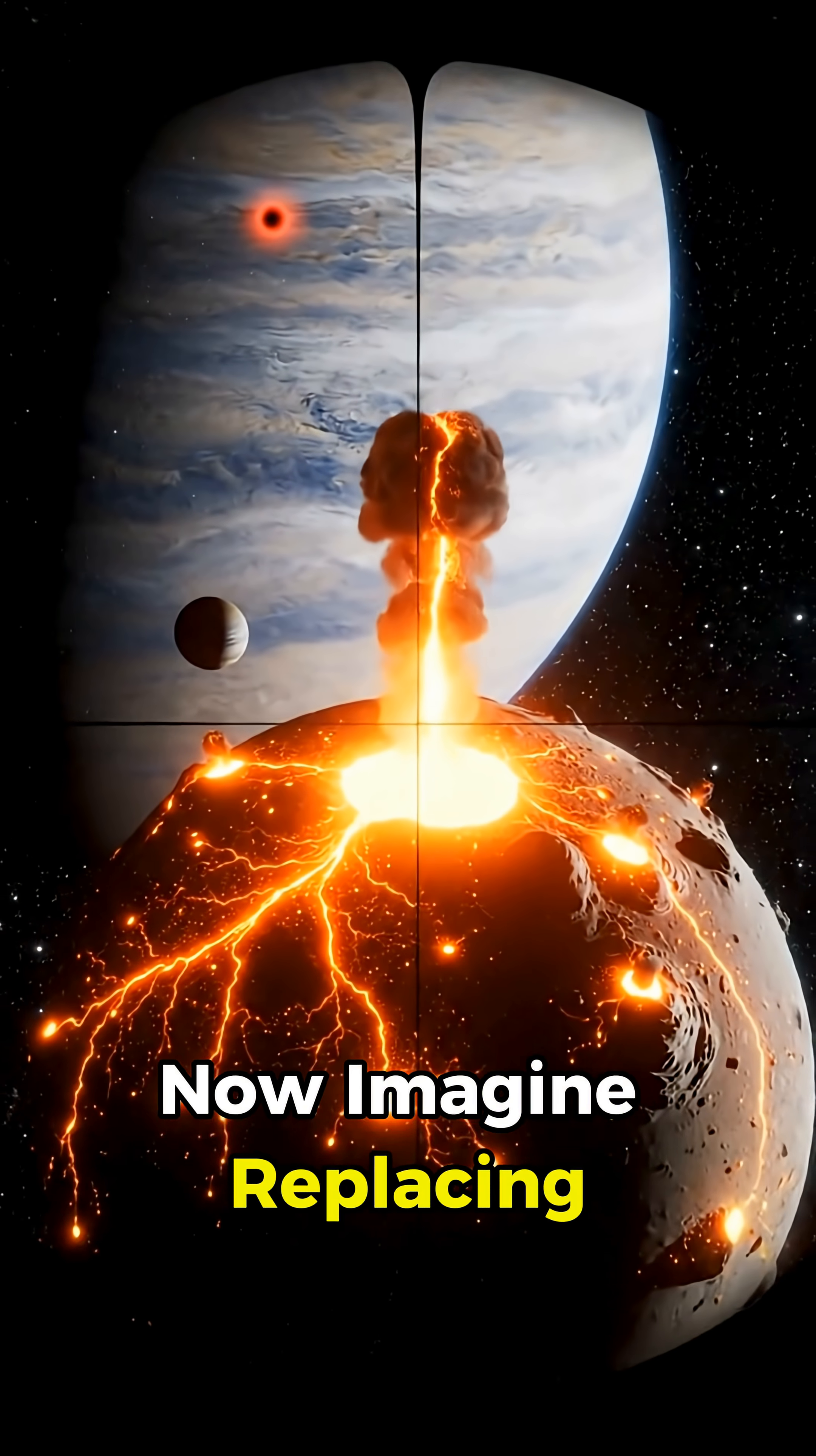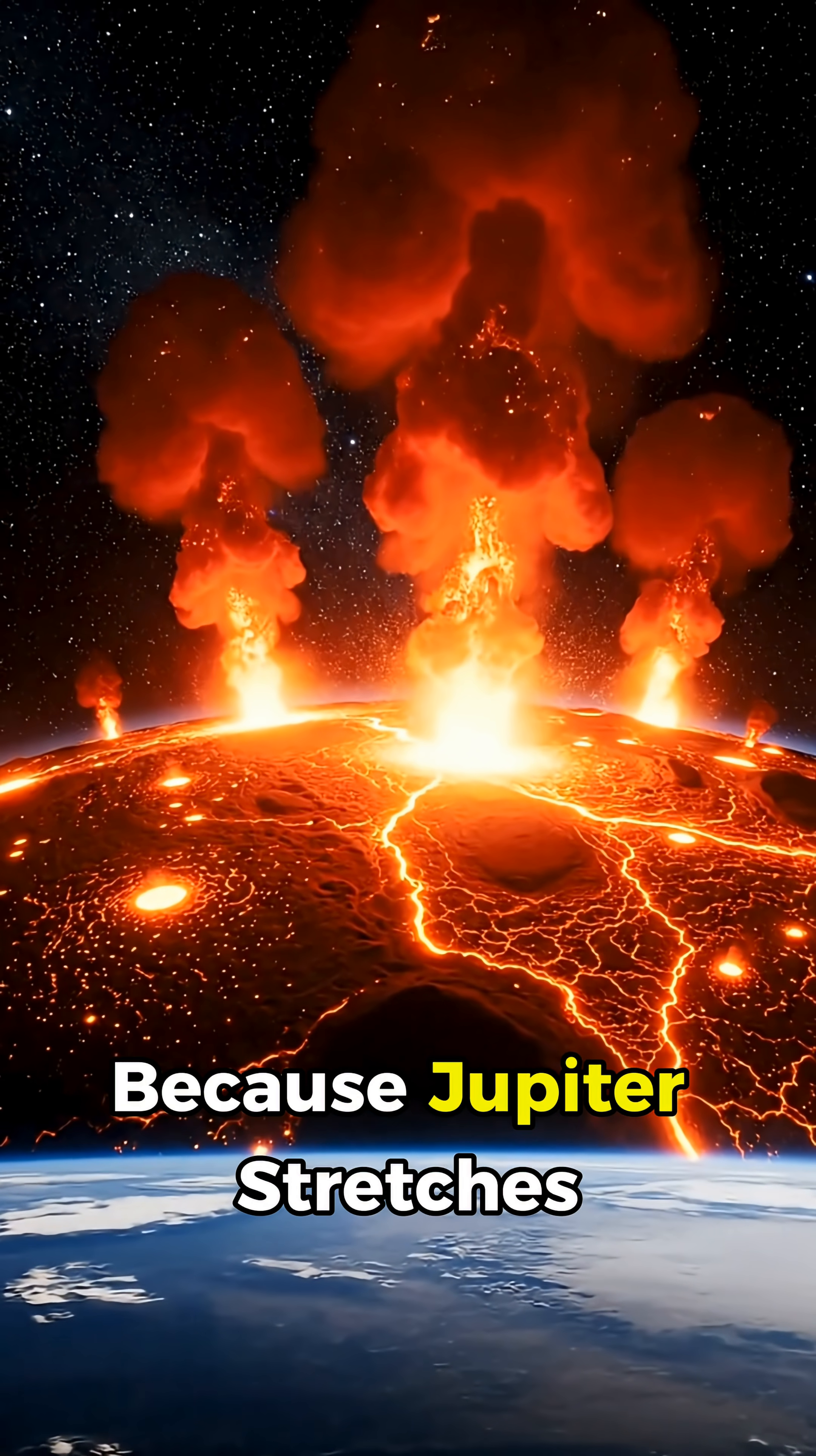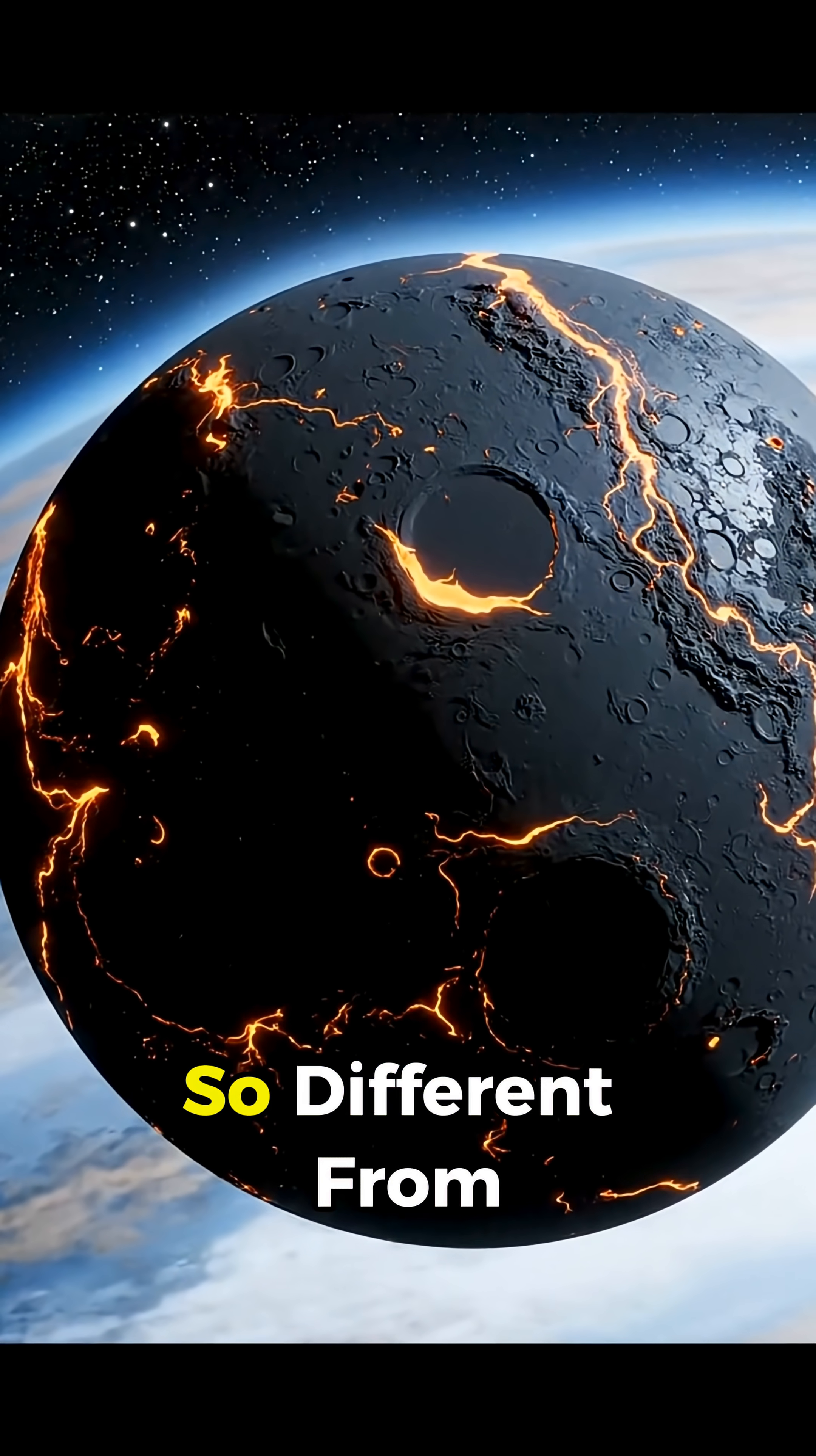Now imagine replacing the moon with Io, Jupiter's violent volcanic moon. It would dominate the sky, glowing with constant eruptions. But Io's chaos only exists because Jupiter stretches it with gravity. Without that pull, Io would slowly cool, its volcanoes would shut down, and it would eventually become a quiet, rocky moon, not so different from our own.